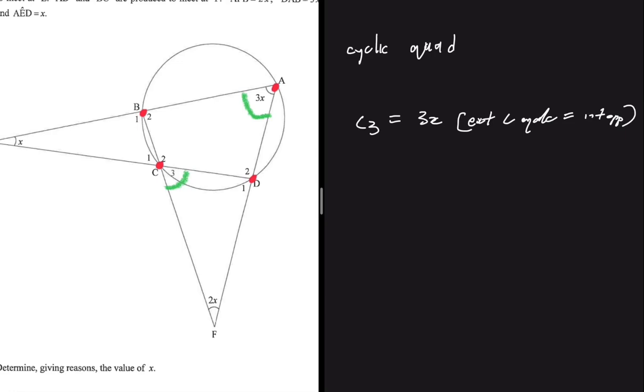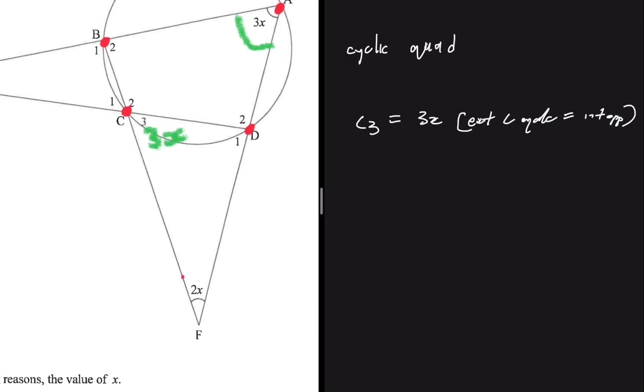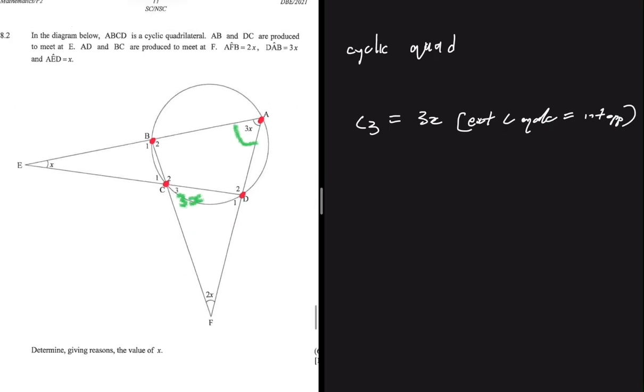So let's change here - instead of c3, let's put 3x. Now in triangle CDF you'll realize that we have 2x, 3x, and angle d1. If we find angle d1 in terms of x, then we can add all those angles and equate to 180 degrees.